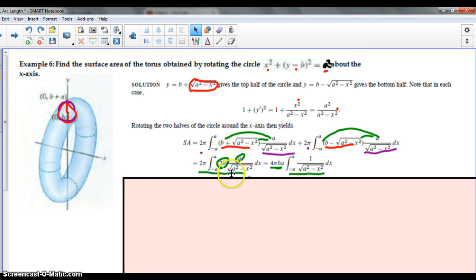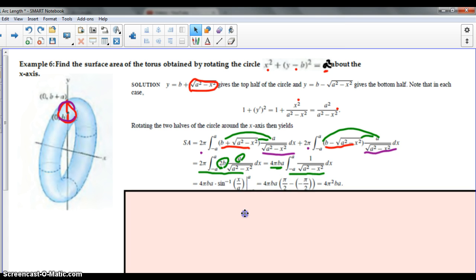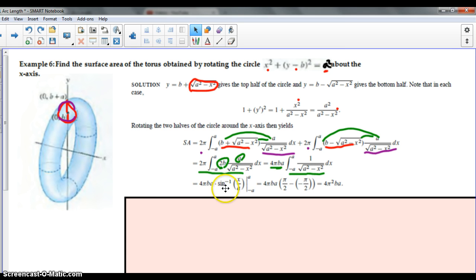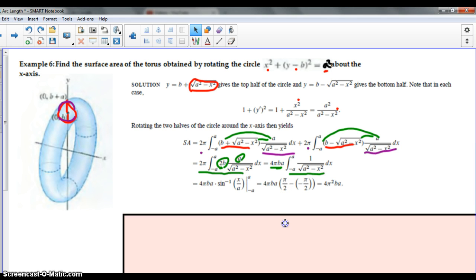Now we have to find the integral shown here, which should look very familiar to you. This can be integrated using inverse trig. Its antiderivative is inverse sine x over a. That's when we have the number squared minus the variable squared. Take the variable, put it over the number square root. And just plug in a and negative a. You're taking the inverse sine of 1 and negative 1, which happens at pi over 2 and negative pi over 2 respectively. And you get a final answer of 4 pi squared ba. That's all of our examples.